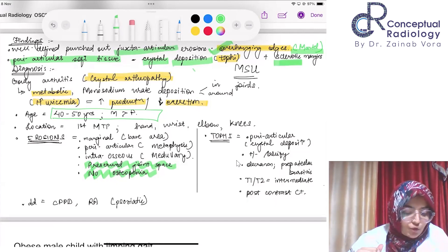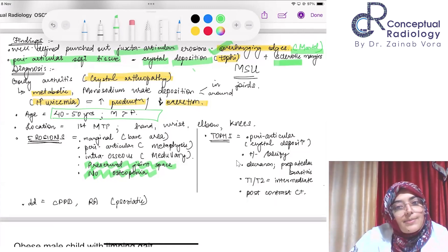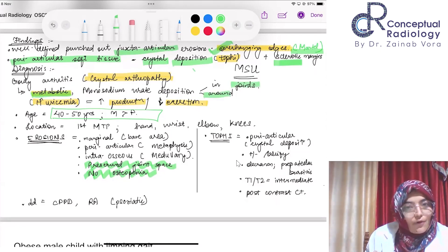Diagnosis is gouty arthritis, which is a type of crystal arthropathy. Another important type is CPPD where calcium pyrophosphate deposition occurs. It also has a predilection for the lower limb, important to look for ankle and knee joint in cases of CPPD. About the etiopathogenesis: this is basically a metabolic disorder with monosodium urate deposition in and around the joints.